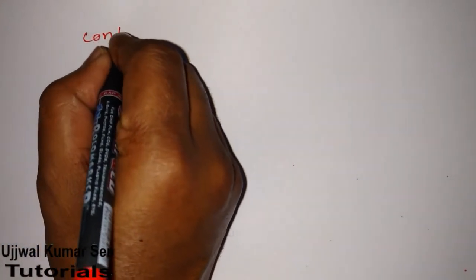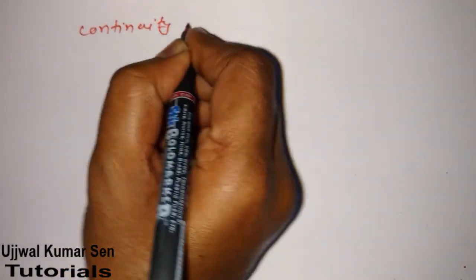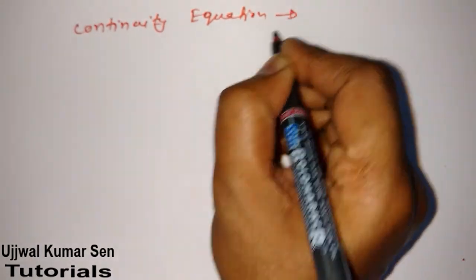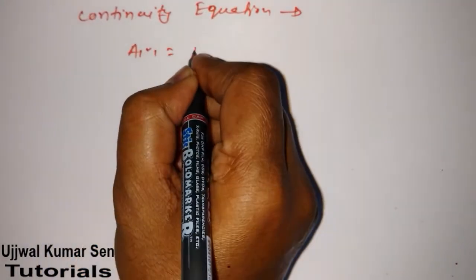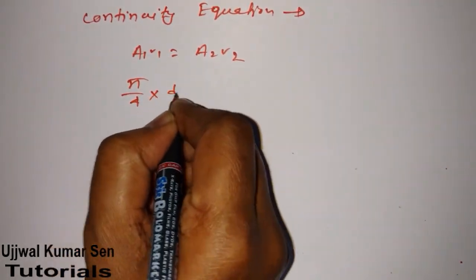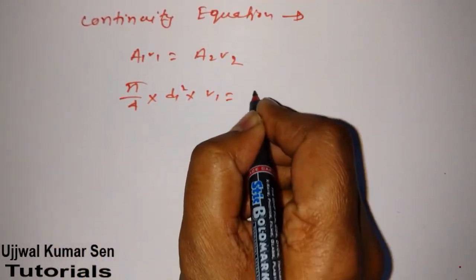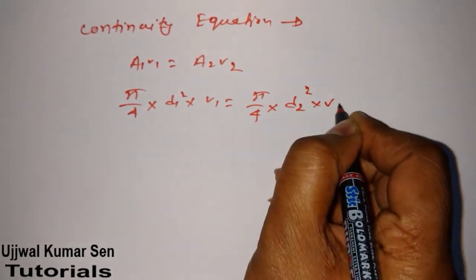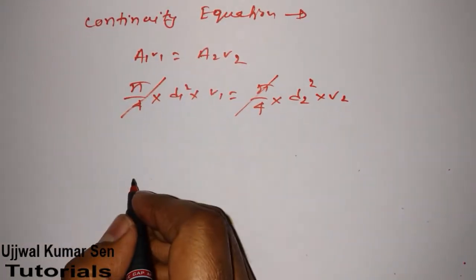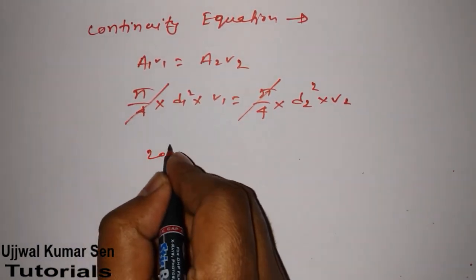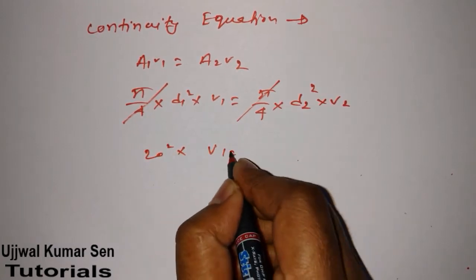Continuity equation states that A₁V₁ = A₂V₂. So (π/4)D₁²V₁ = (π/4)D₂²V₂. π/4 cancels out. D₁ is 20 and D₂ is 10. Both are in the same unit, so 20² V₁ = 10² V₂.